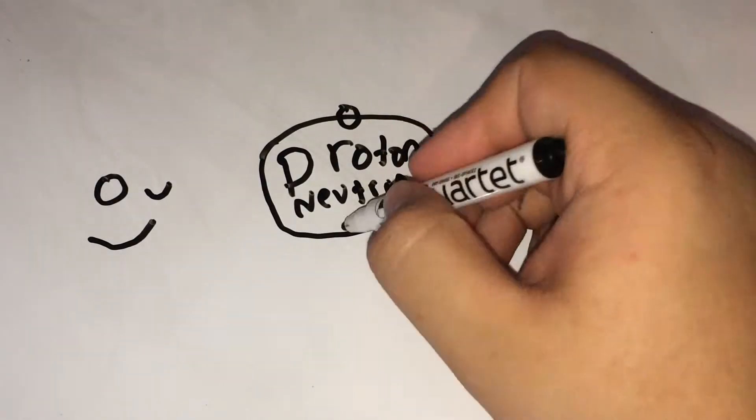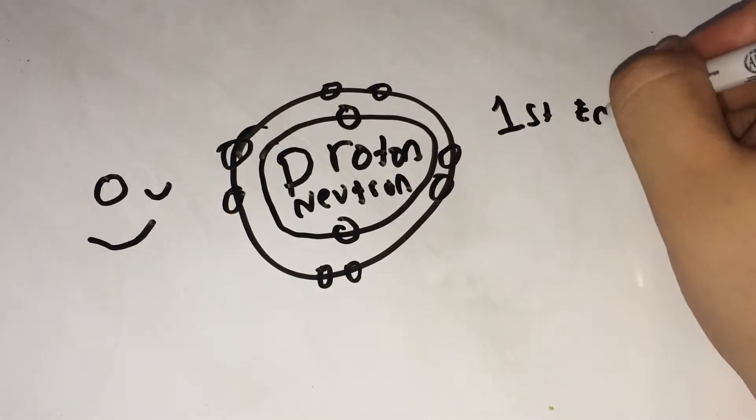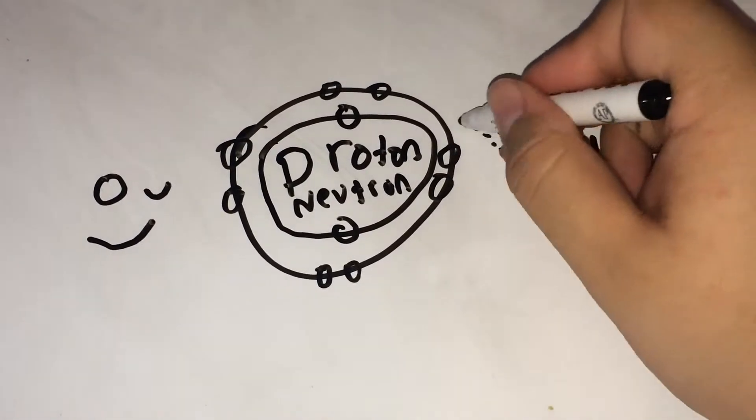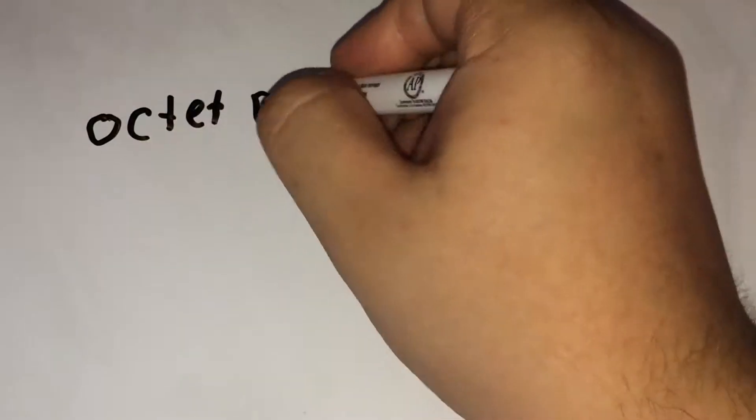Anyways, in the first level only two electrons can orbit in it, the second and beyond can only fit eight. For the exception of hydrogen, each element wants to follow the octet rule, which means that in the second level or third, depending on how many electrons, the element wants eight electrons in the level.